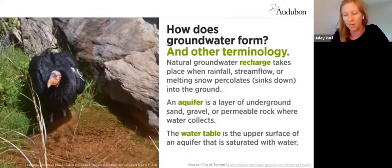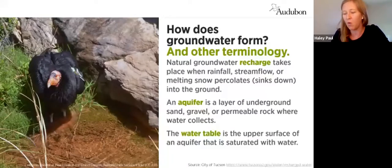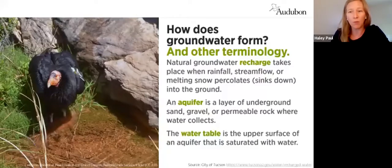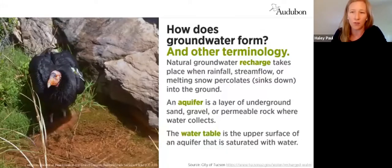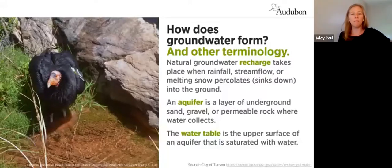So how does groundwater form? Natural groundwater recharge takes place when rainfall, stream flow, or melting snow percolates or sinks down into the ground. An aquifer is a layer of underground sand, gravel, or permeable rocks where water collects, and the water table is the upper surface of that aquifer saturated with water.